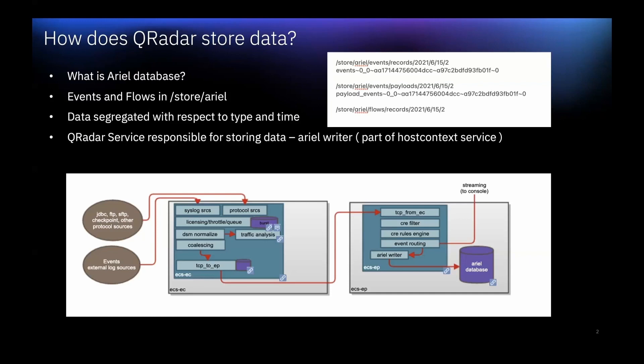Then we have the Traffic Analysis component. Events from new or unknown log sources that were not detected in the past are redirected to the Traffic Analysis Auto Detection engine. When new log sources are discovered, a configuration request message to add the log source is sent to the QRadar console. If the auto detection engine is disabled or you exceed your license limit, the new log sources are not added. After that, we have the Coalescing component, where events are parsed and then coalesced based on common attributes across events.